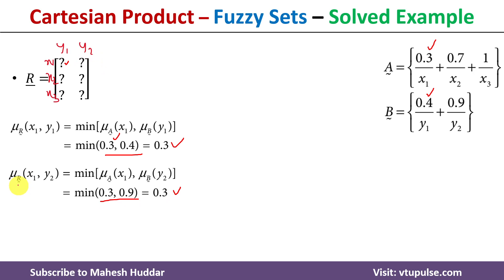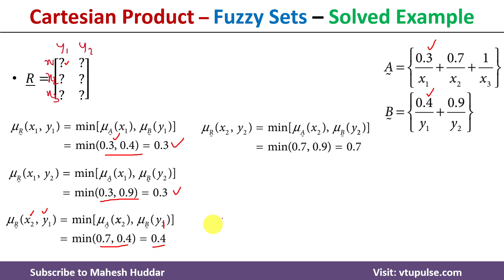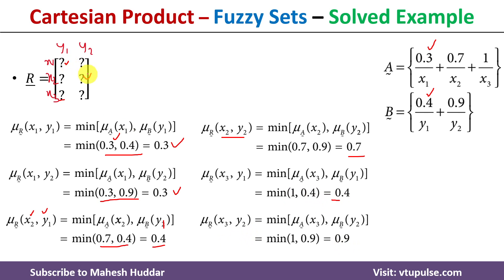For x2y1: the minimum of x2's membership value (0.7) and y1's membership value (0.4) is 0.4. For x2y2: the minimum of 0.7 and 0.9 is 0.7. For x3y1: the minimum of 1 and 0.4 is 0.4. For x3y2: the minimum of 1 and 0.9 is 0.9.